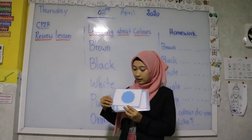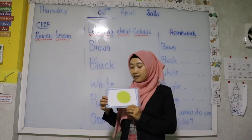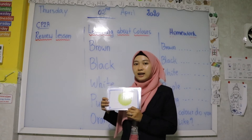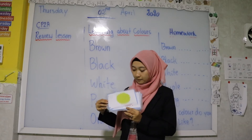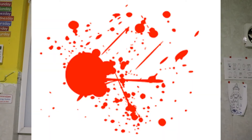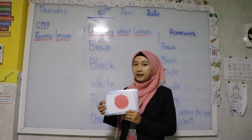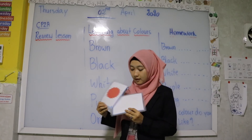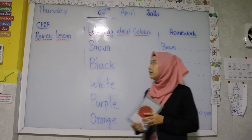The next word is green. Green is spelled G-L-E-E-N. Green. And this one is red. Red is spelled L-E-D. Red. That's all for our review lesson.